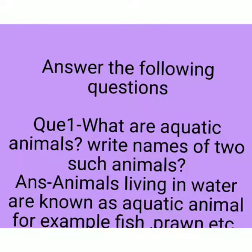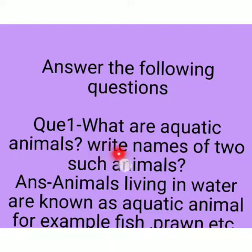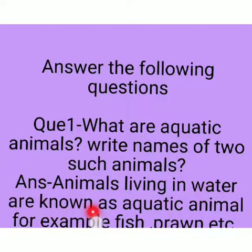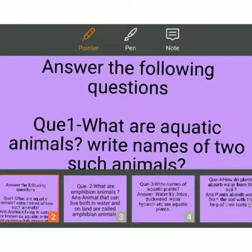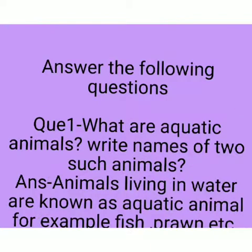Question 1: What are aquatic animals? Write names of two such animals. Answer: Animals living in water are known as aquatic animals. For example, fish, prawn, etc.